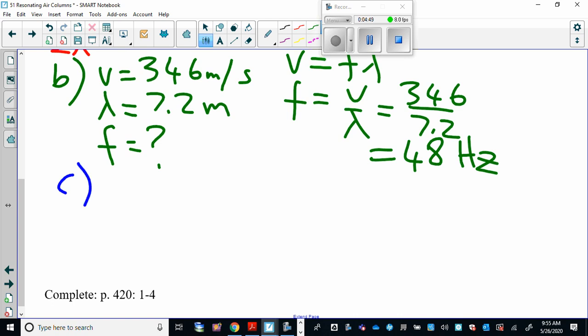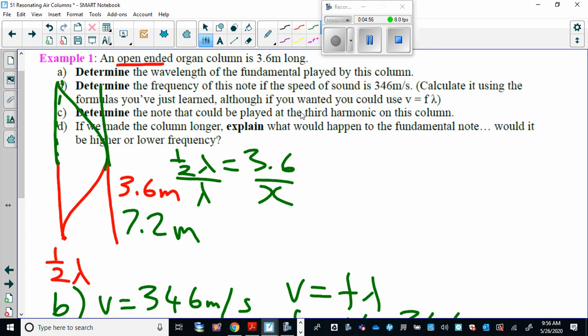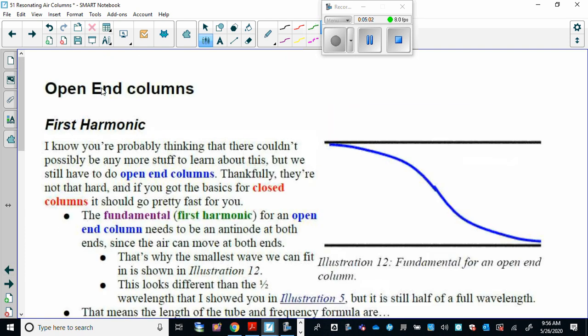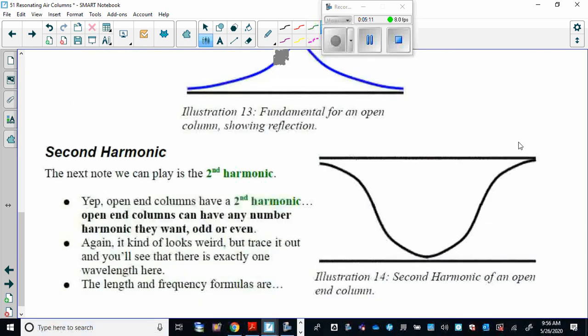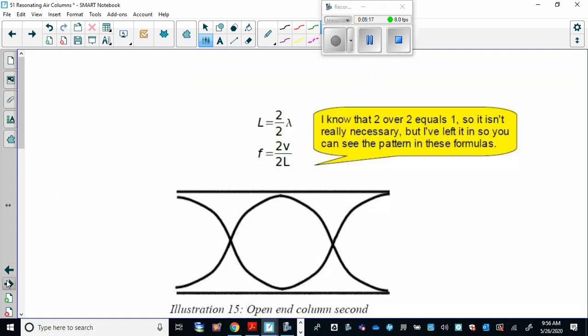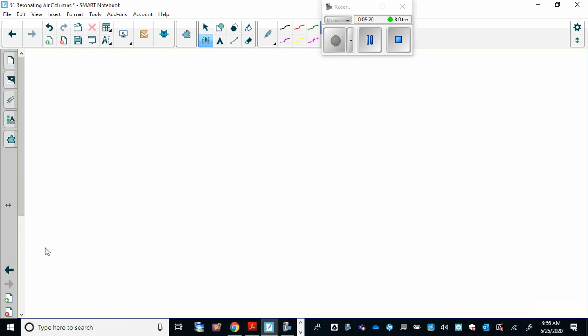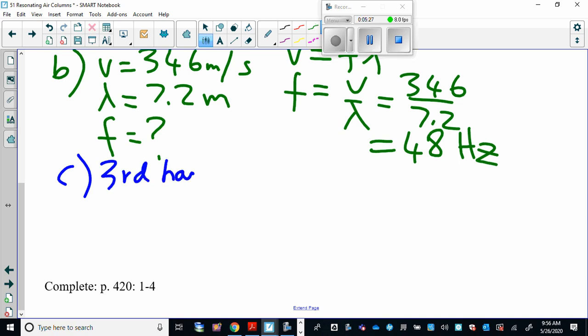C says, determine the note that could be played at the third harmonic on this column. So the third harmonic, you need to know what that is. Let's go back. We've got an open-ended column. The first harmonic is where you have half a wavelength. The second harmonic is where you have a full wavelength. And so the third harmonic is when you have one and a half wavelengths.